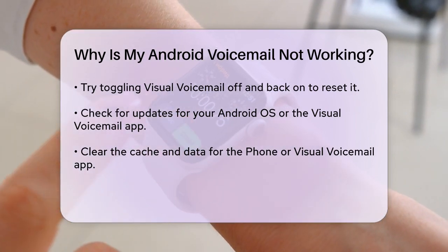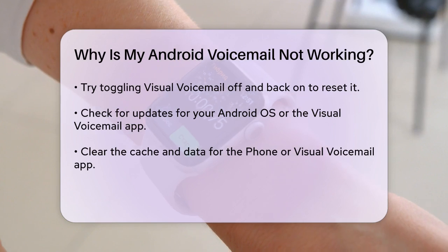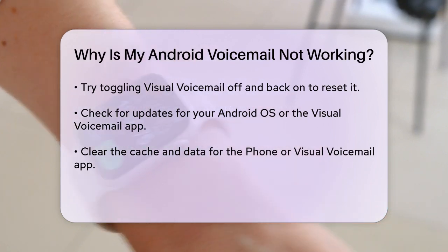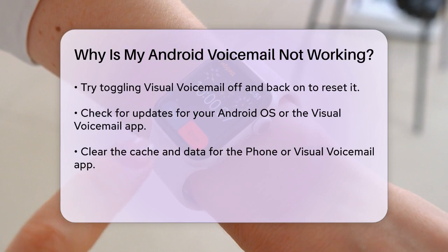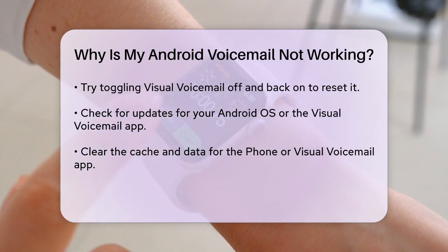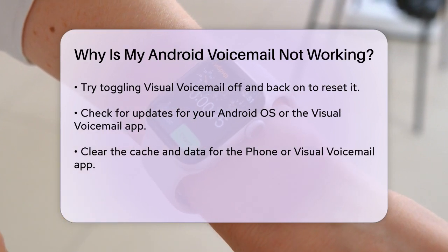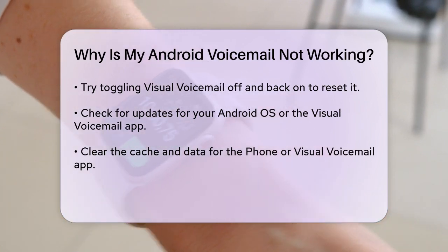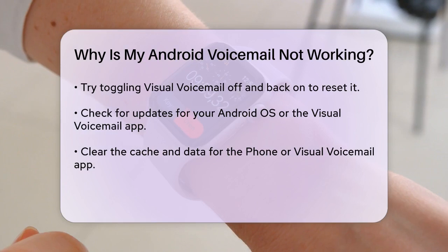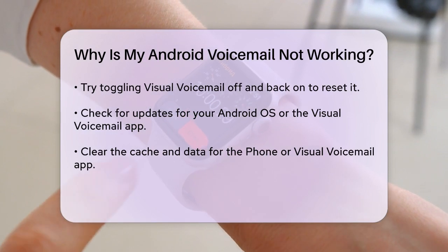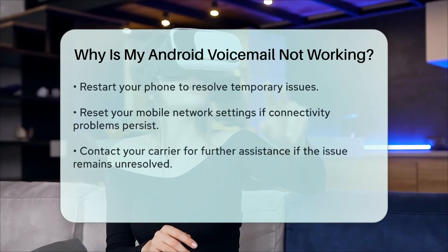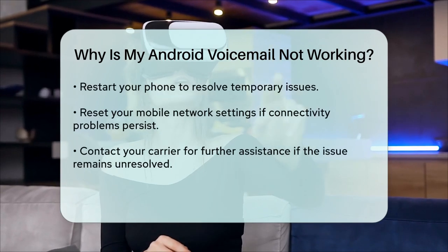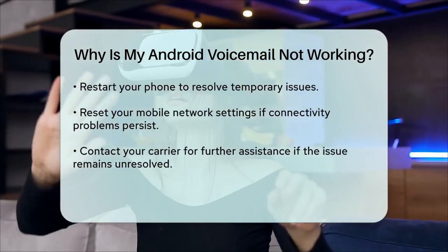If the problem persists, restart your phone. A simple reboot can fix temporary issues related to caching or stuck processes. For Samsung phones, press and hold the Power button until you see the Power Off prompt, then tap Restart. For other Android phones, press and hold the Power button until you see the Options menu, then tap Restart.